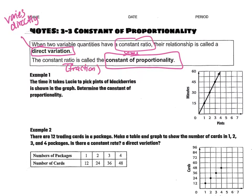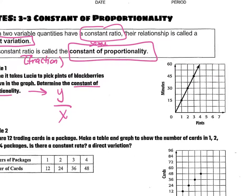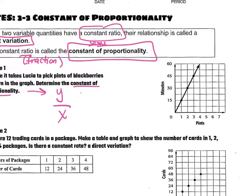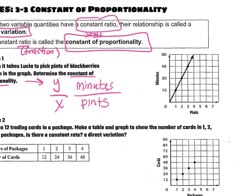So on example one, we've got a graph. The time it takes Lucia to pick pints of blackberries is shown in the graph. Determine the constant of proportionality. When we're asked to solve that, we're doing the same thing we did yesterday and the day before. We are trying to find the change in y on top of the change in x. So for this specific graph, we want to see the change in minutes over the change in pints.